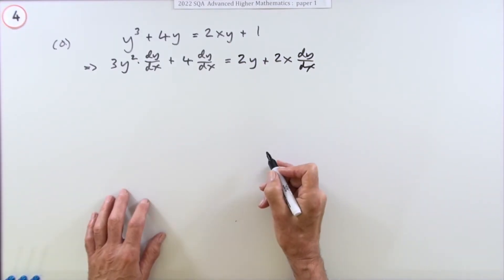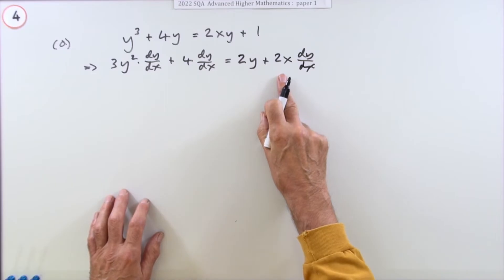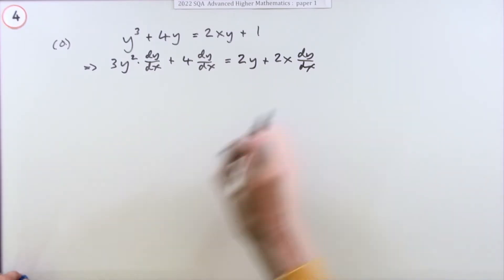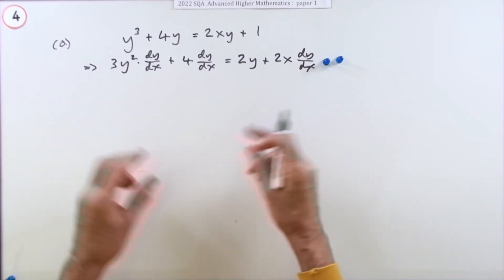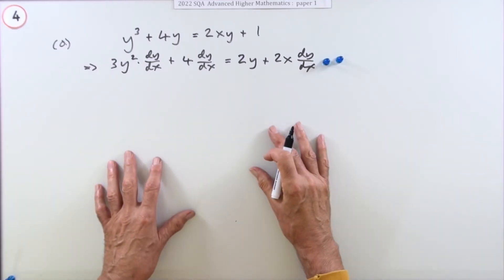That's worth two marks essentially. They sort of split it up and say using the chain rule and using the product rule, but essentially it's two marks for doing the two bits.